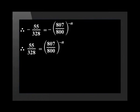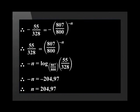Finally, using the log definition, we will have minus n equal to the log of 55 divided by 328 with a base of 807 divided by 800. This will give us an answer of minus 204.97 months. Therefore, n equals 204.97 months.